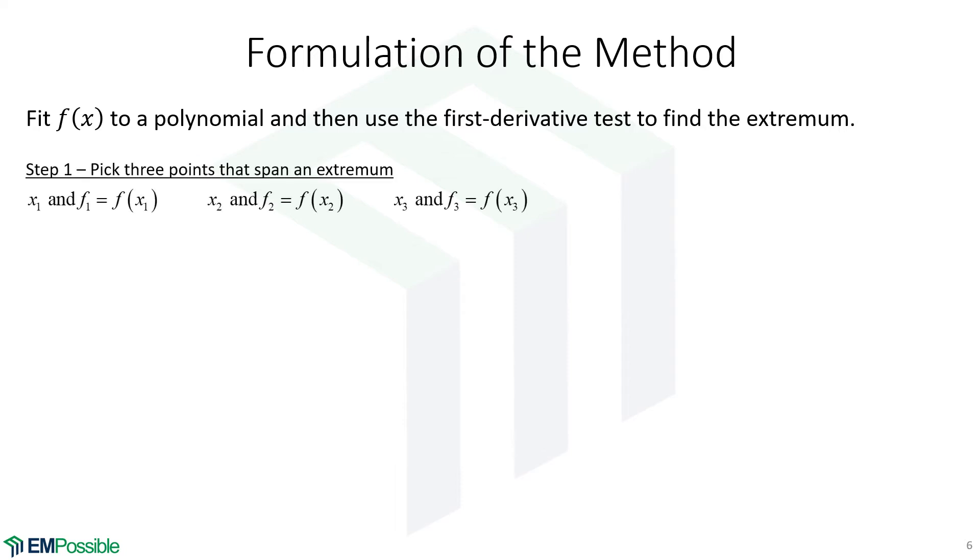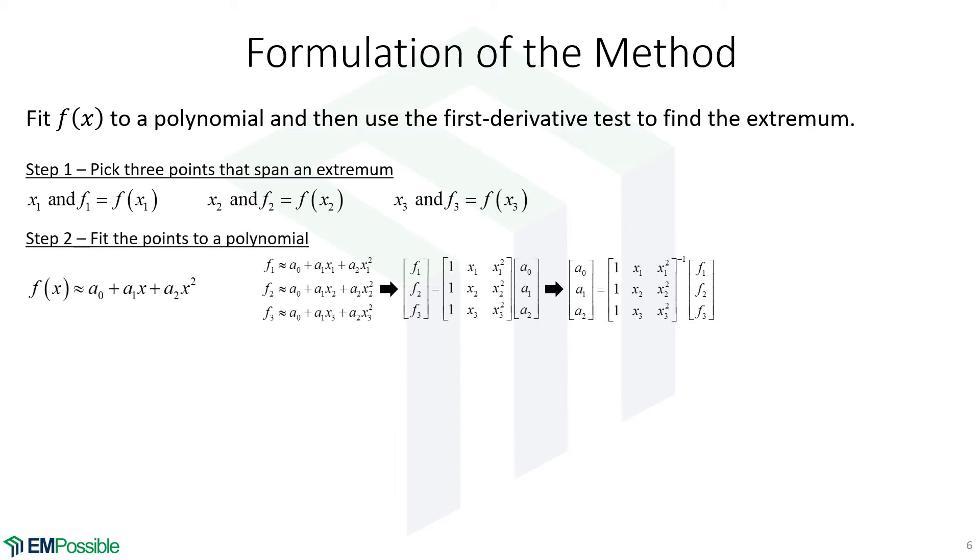So step one, we pick three points that hopefully span the extremum, or they at least characterize the shape of the curve enough that our polynomial will find the extremum to our desired degree of accuracy. But let's say they span the extremum. Then we'll fit the points to the polynomial, and we'll calculate those polynomial coefficients, a0, a1, and a2.